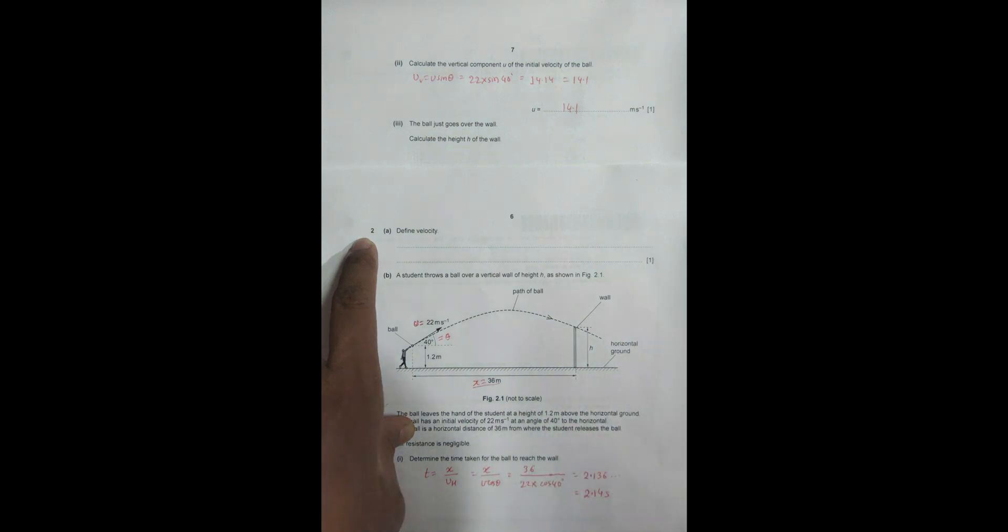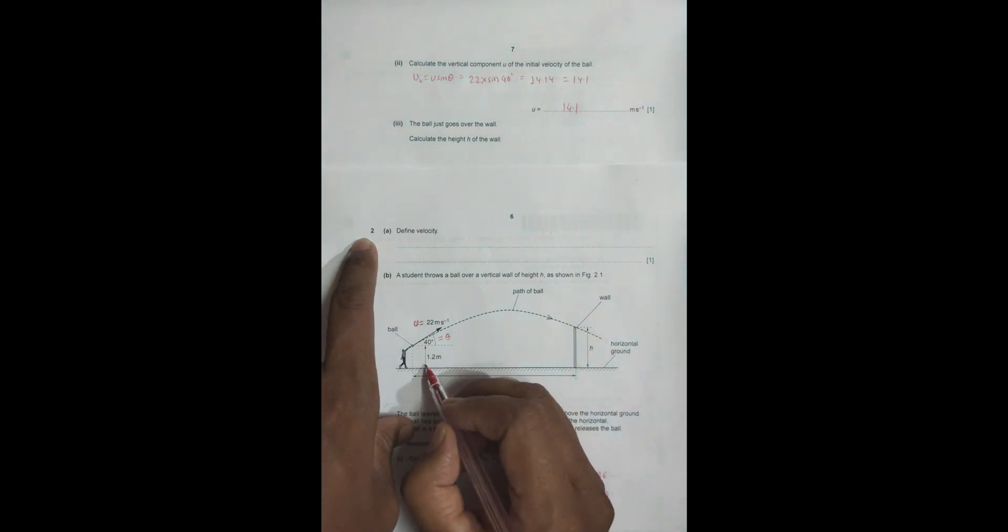The ball just goes over the wall. Calculate the height h of the wall. We have to calculate this height. What we should do is, we are given this 1.2, so first we find the vertical displacement of this body at that moment. This is the vertical displacement of the body in the projectile motion in this time t, which is 2.14 seconds.